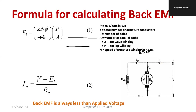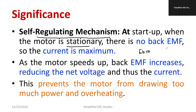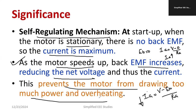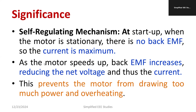When Eb is zero, the current is maximum. Mathematically, Ia = (V − Eb) / Ri, and since Eb is zero, Ia is very high. When the motor speeds up, the back EMF slowly increases, reducing the net voltage and opposing the increasing current. This minimizes the value of current and prevents the motor from drawing too much power and overheating. So the winding remains safer — otherwise motor winding overheating issues would arise.